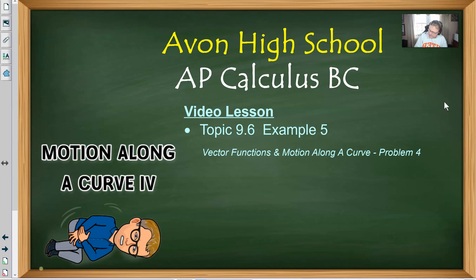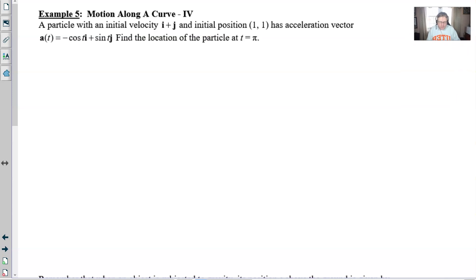Let's take a look at our example number five. As you can see in the problem, we have a particle with an initial velocity i plus j, an initial position (1,1), that has an acceleration vector given as negative cosine t i plus sine t j. Our job is to find the location of the particle at t equal π. Basically the point of this video is just to reiterate the procedures that you would use to move from an acceleration or velocity type of vector to your position. This is a good problem to take a look at.